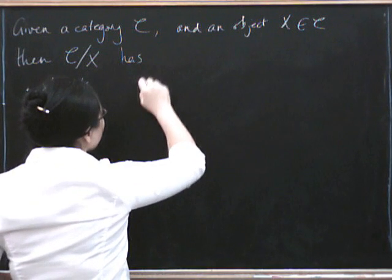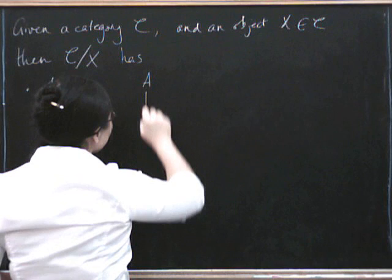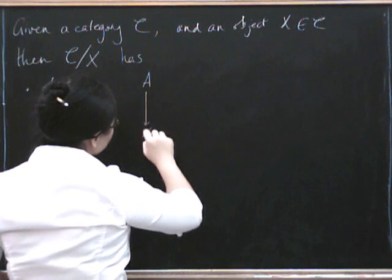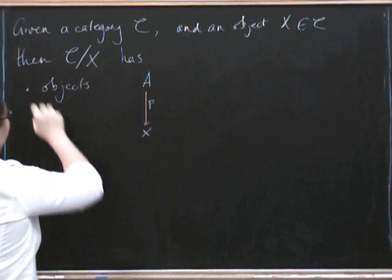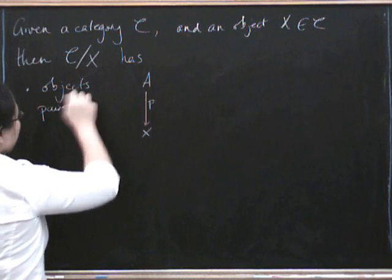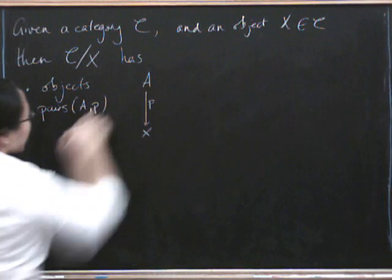So the objects of this category are pairs, an object A together with a morphism down to x. So it's pairs A, P, like that.